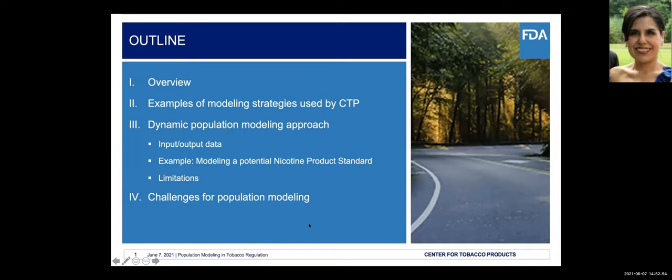I will start this presentation with an overview of population modeling. Then I will talk about examples of modeling strategies used by CTP FDA to date. I will briefly present some of the mathematical formulation and discussions related to the dynamic population modeling approach that CTP has been using in some regulatory activities, focusing on input and output data. I will present an example of modeling a potential nicotine product standard and discuss some limitations of that framework, and finalize with challenges for population modeling.